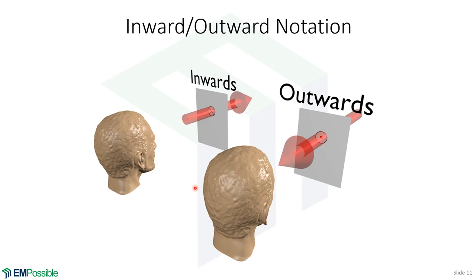Here's a way to visualize the inward and outward notation. Imagine this is your head and face. If you see a circle with a cross on paper, we're talking about a vector pointing away from your face — like looking at the fins at the back of an arrow. If you see a circle with a dot, you're looking at a vector coming toward your face, like looking at the tip of an arrow. Now you know what that notation means and how to visualize it.